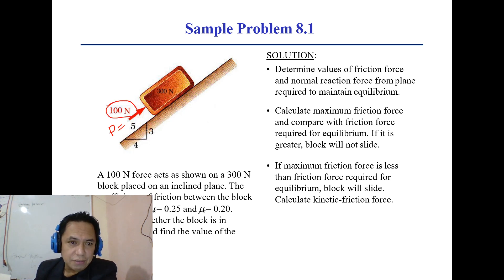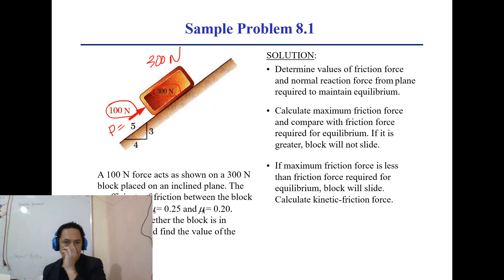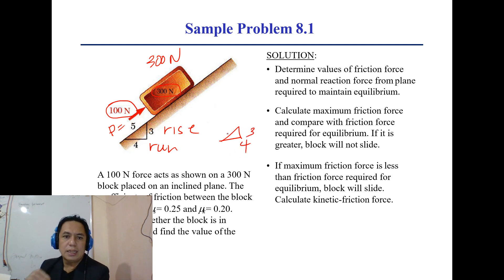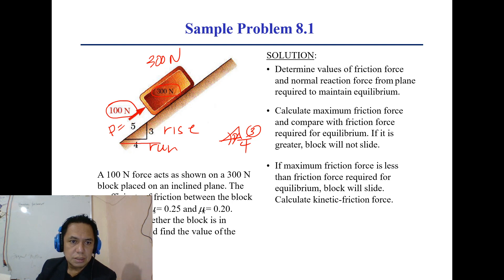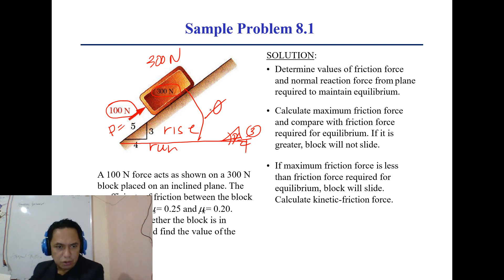The block is 300 newtons. The inclined plane has a rise-over-run ratio of 3 over 4 — from that we can determine the angle using opposite over hypotenuse. The coefficients of friction between the block and the plane are mu-static = 0.25 and mu-kinetic = 0.2.